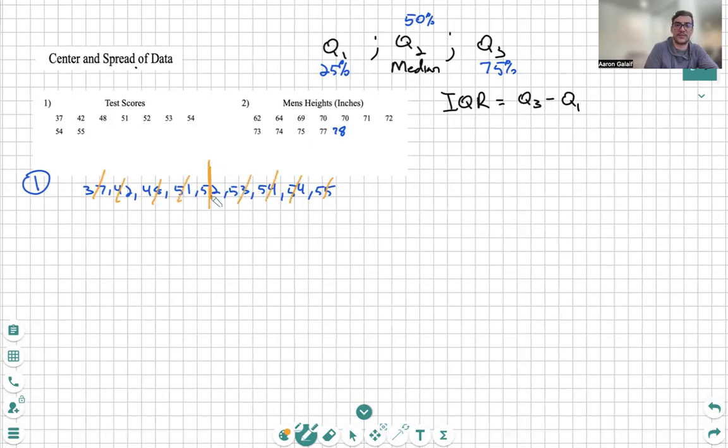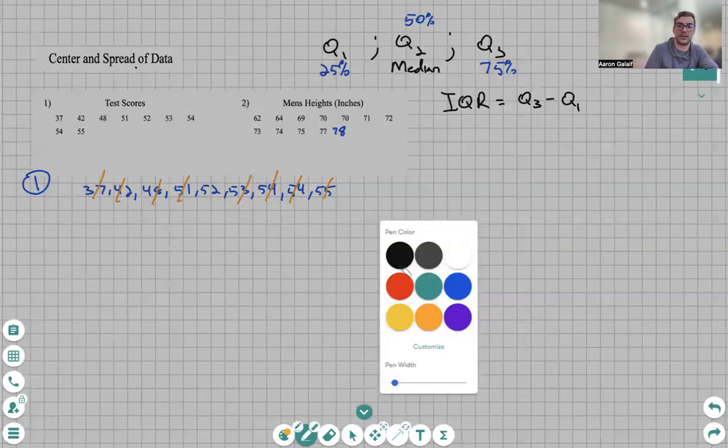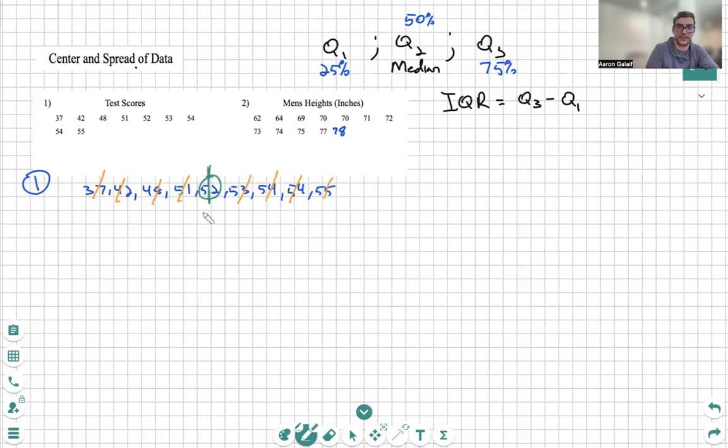Let's find the median. We will slowly cancel things out, one on each side, one on each side until we get to the middle. The median is 52, so our Q2 is 52. Let's do that in a different color.